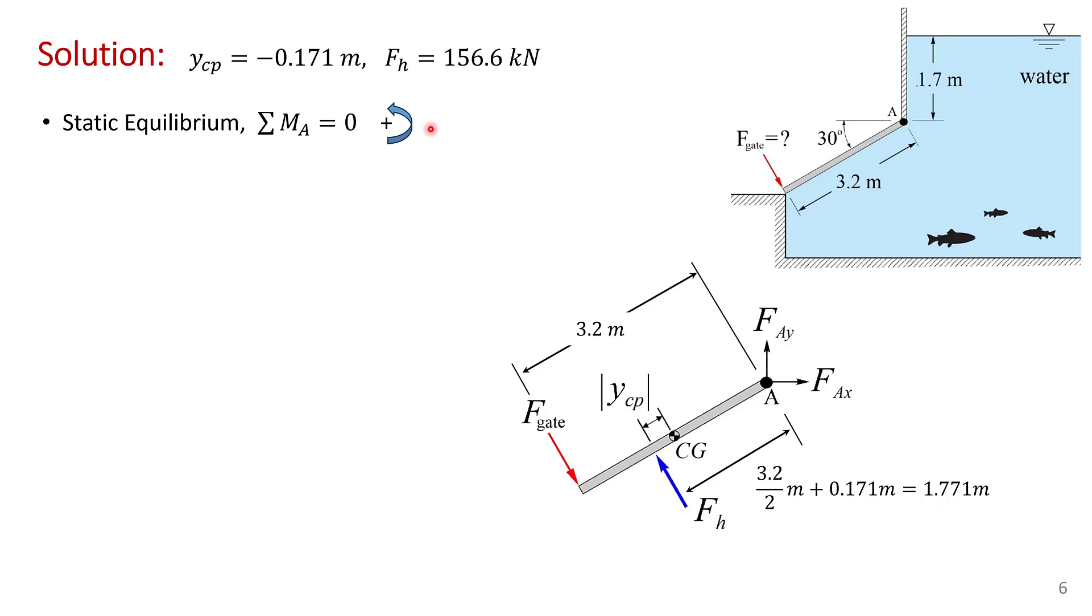So applying our sum of the moments. f gate times 3.2 has got to be balanced by the hydrostatic force times its moment arm 1.771. And we can solve for that gate force which is the only unknown. So we take f h times 1.771 divided by 3.2. And we previously calculated that the hydrostatic force was 156.6 kilonewtons. That works out to a gate force of 86.7 kilonewtons pointing downwards normal to the gate.